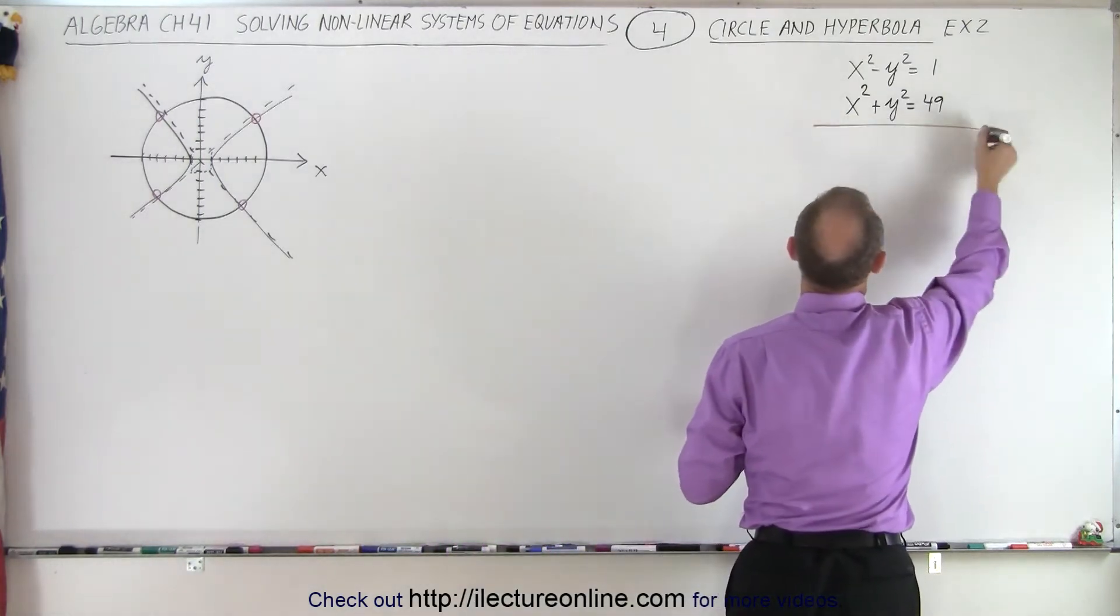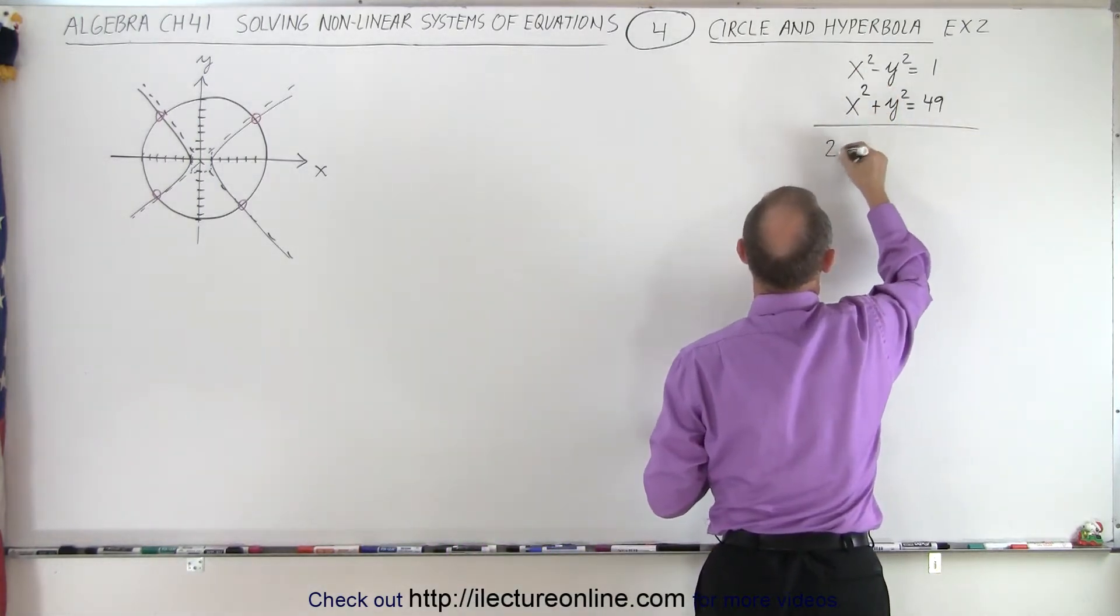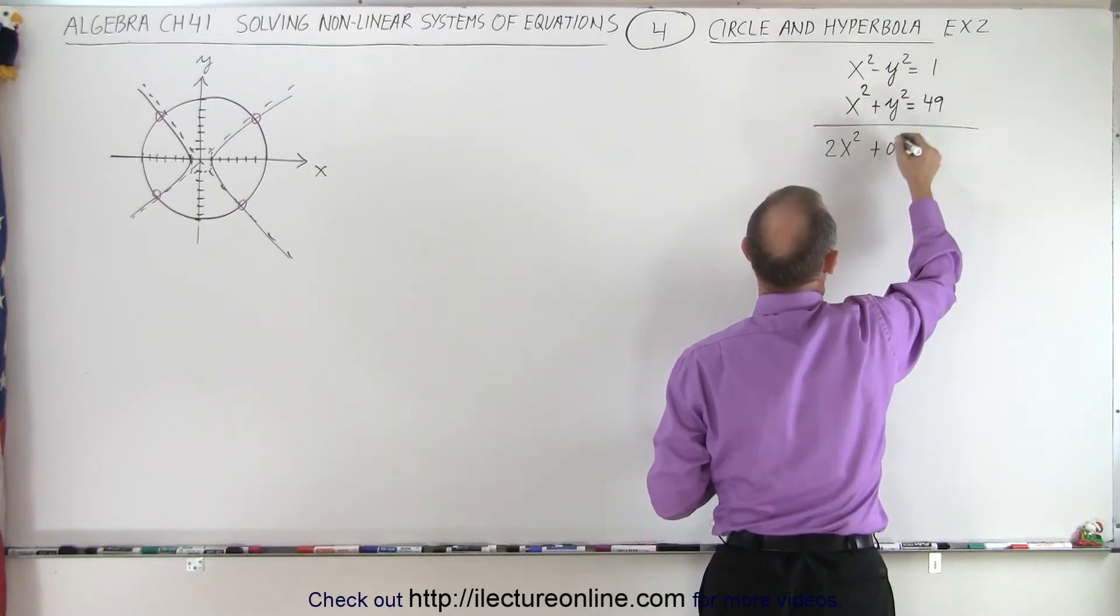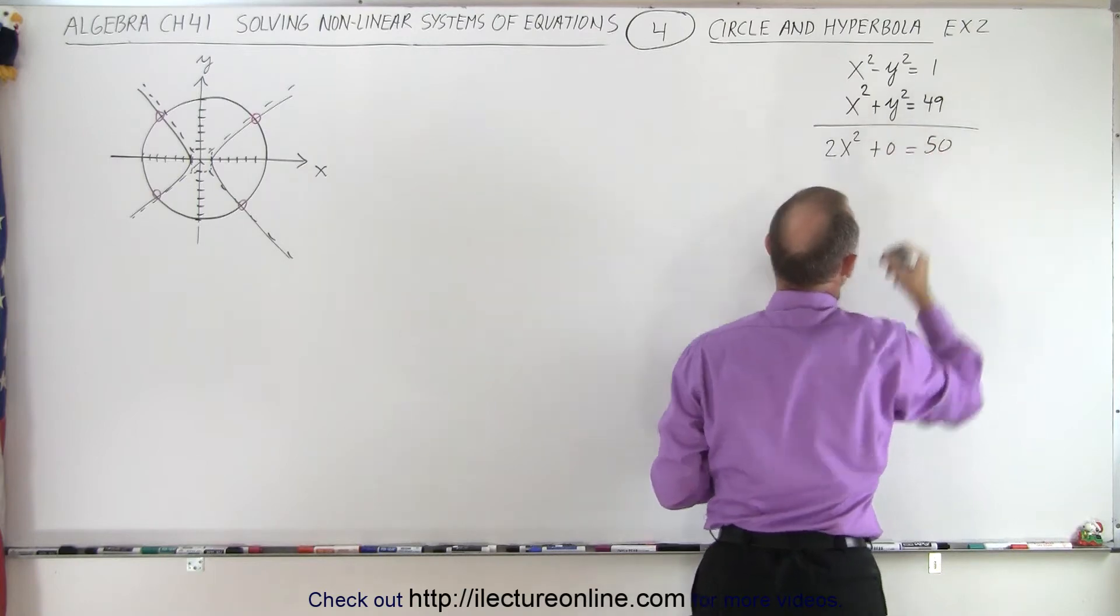We're going to add the two equations. x squared plus x squared is 2x squared. Minus y squared plus y squared is plus zero. And that equals, when you add them together, you get 50.